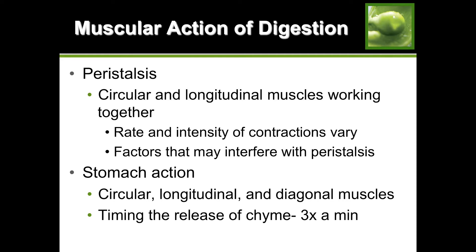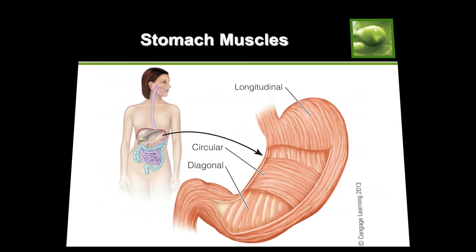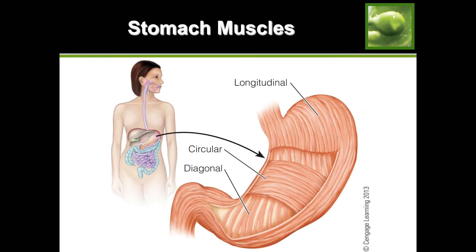Moving on to stomach action: the stomach has three types of muscle - circular, longitudinal, and diagonal. The release of chyme is timed; the pyloric sphincter releases chyme about three times a minute into the small intestine. The deep muscle layer is the diagonal, then comes the circular, and the superficial one is the longitudinal. Your stomach is essentially a muscle.